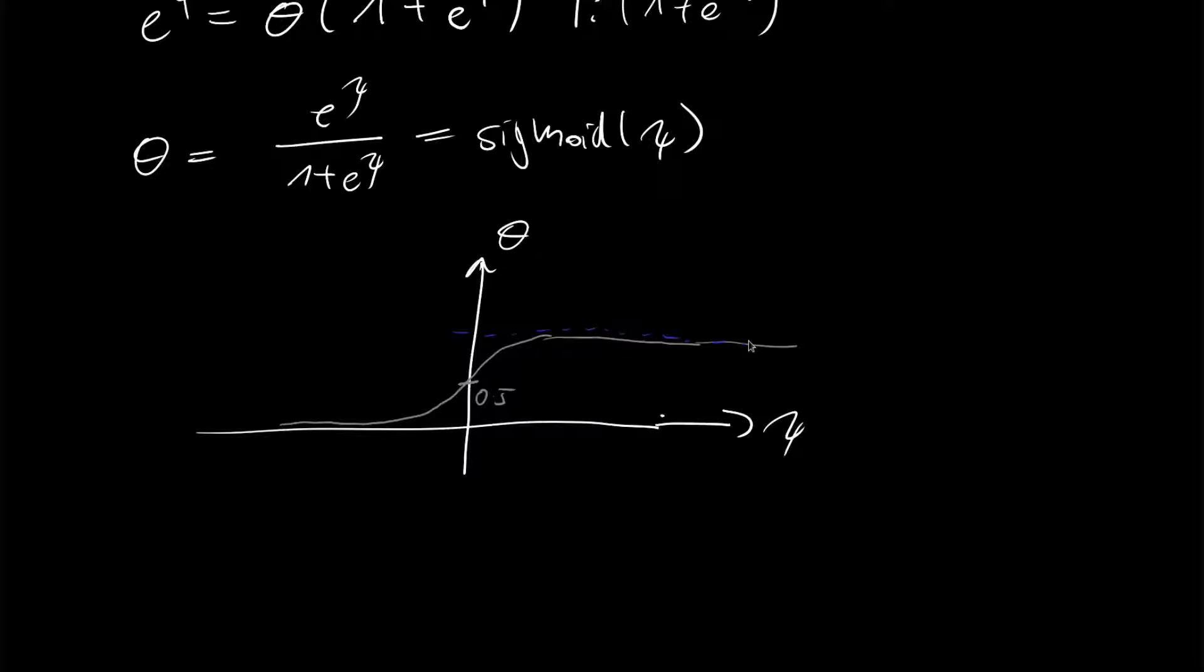So it approaches towards 1. This is also the function that is linked with logistic regression. Since we use the psi parameter to define a Bernoulli, we call it the logistic unit or logit.